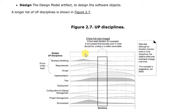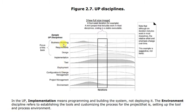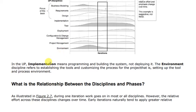We have multiple UP disciplines but we study only three main ones: Business Modeling, Requirements, and Design. The other disciplines include Implementation, Test, Deployment, Configuration and Change Management, Project Management, and Environment. In this book, we focus mainly on the three core ones. Implementation means programming and building the software — not just deploying the system.